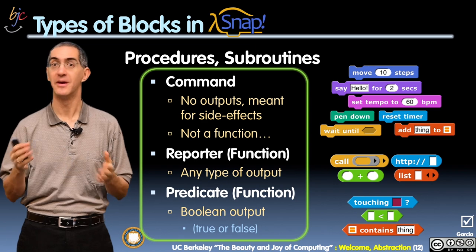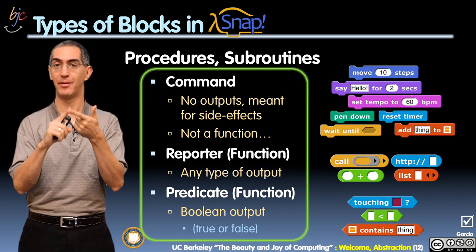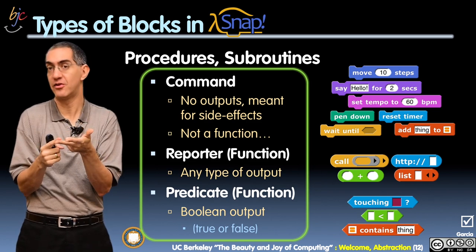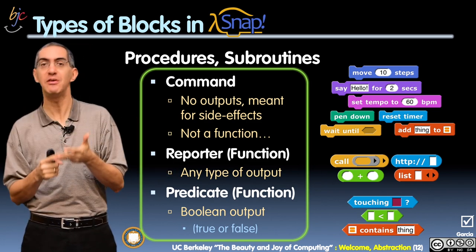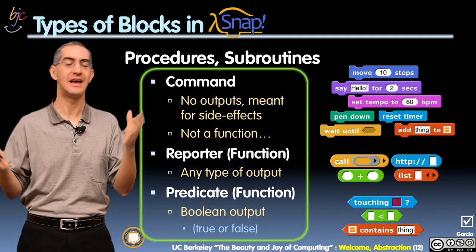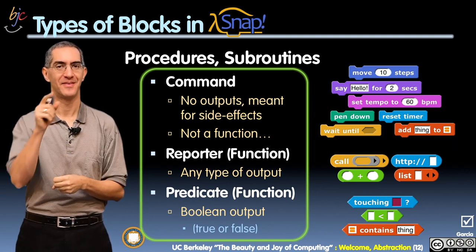In summary, we've given you a sample of a couple of data types. We looked at what domain and range were and looked at more examples there. And we showed you in Snap how these three shapes of blocks help you design your programs. On to the next video.